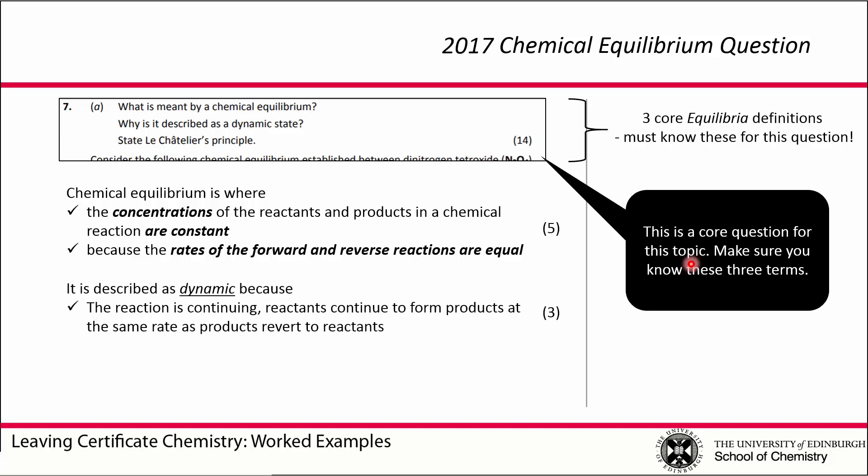We have reached a state of chemical equilibrium. It's called dynamic because even though the concentrations aren't changing, the forward and reverse reactions are still happening — there is a lot of movement going on. The concentrations don't change because as reactants form products, at the same time some products are reverting back to form reactants. That dynamic nature underlies the fact that the concentrations aren't changing.